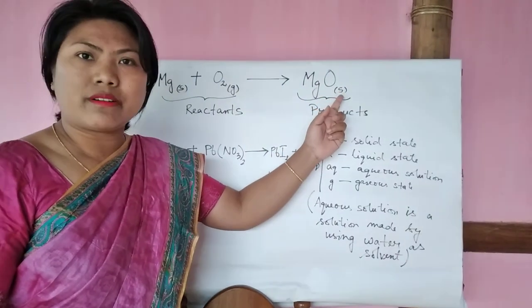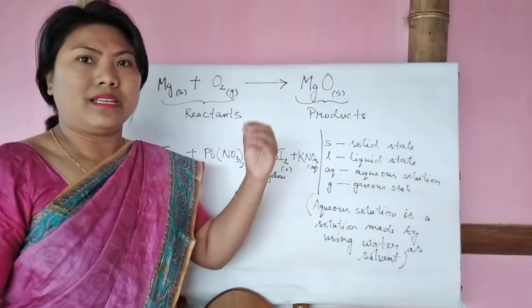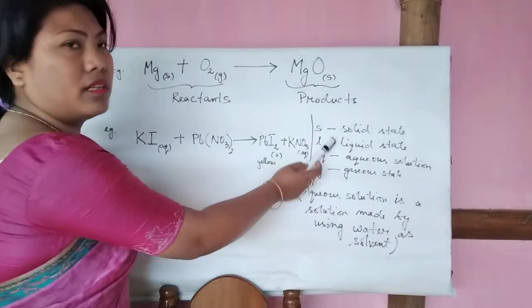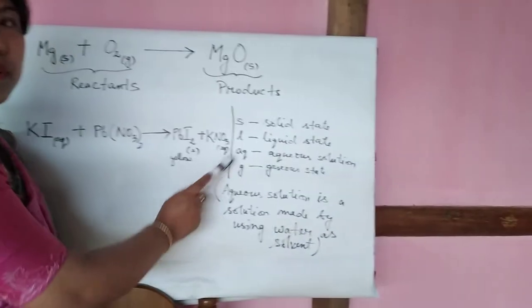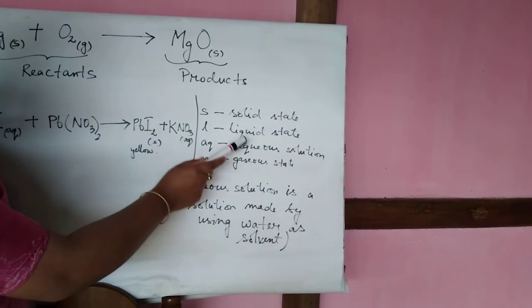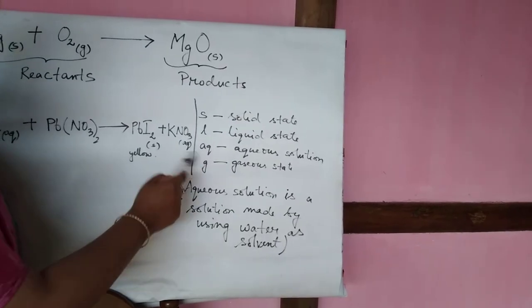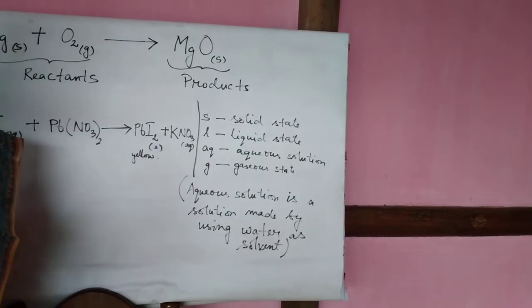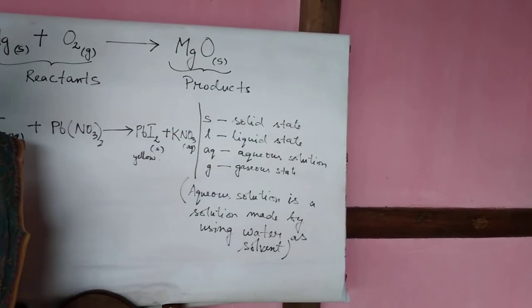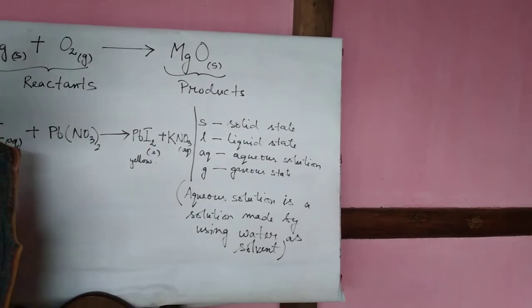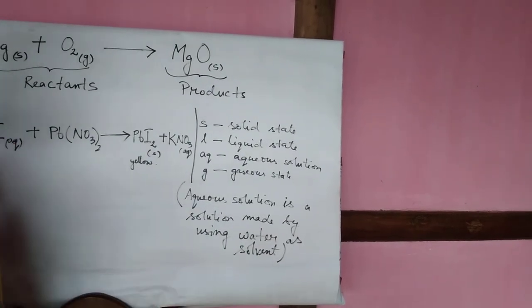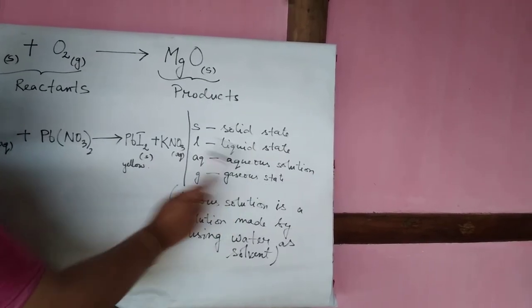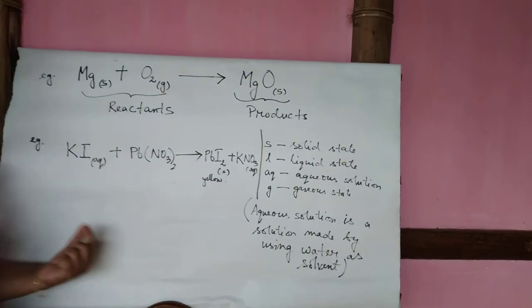So this superscript will represent the state of the reactants and products. And for your information, I have written here also. For S, small s will represent solid state. L will represent liquid state. And aq, aq will represent aqueous solution. That means you will take your reactants in the solution form with water, that means by making solution with water as the solvent. And then if it is in the gas, then you will write small g.